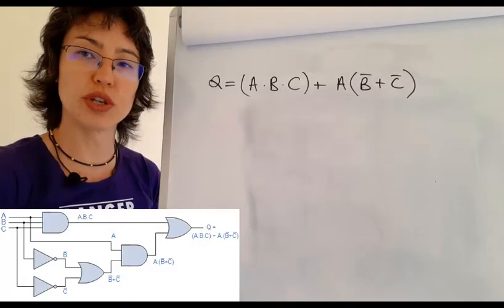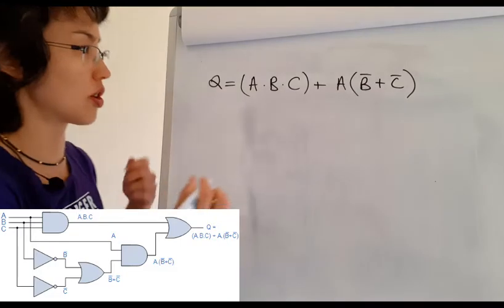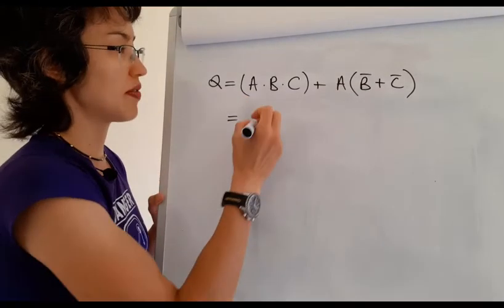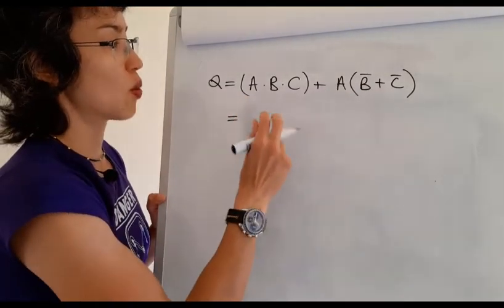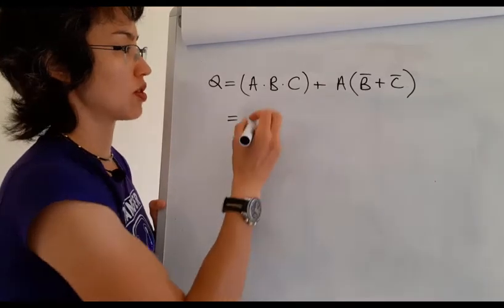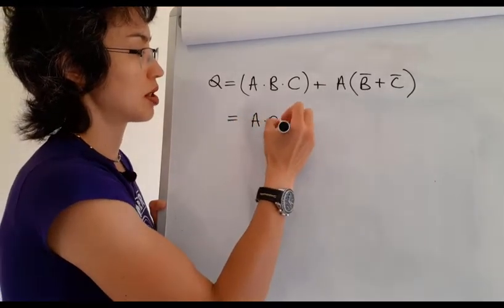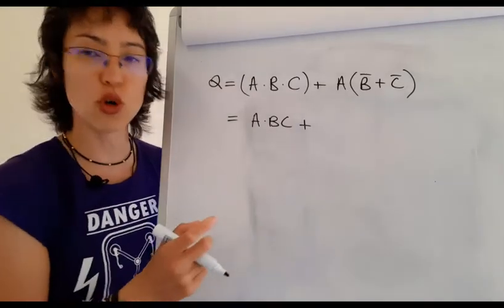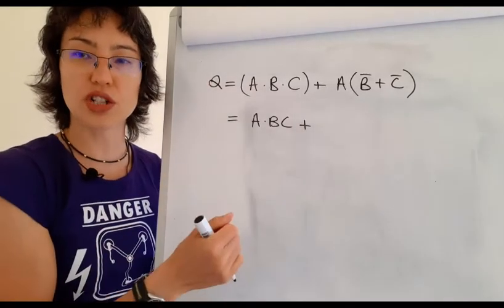This is the output function that we just got from the circuit I showed. So in order to simplify this here we can also employ De Morgan's Laws because this is equal to this. Now we know in De Morgan's Laws if you break the line you change the sign.